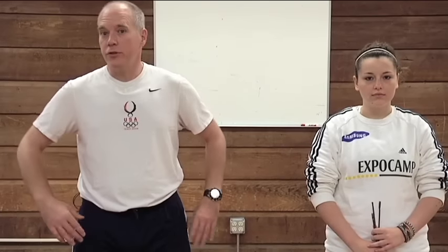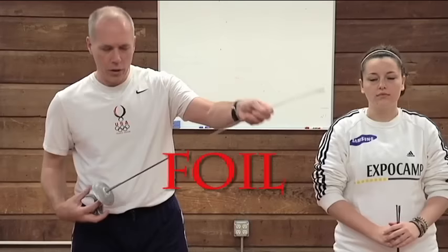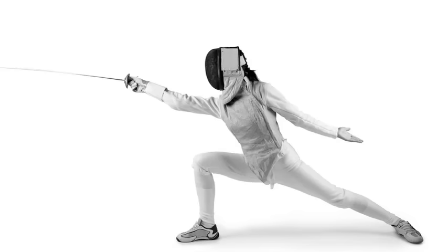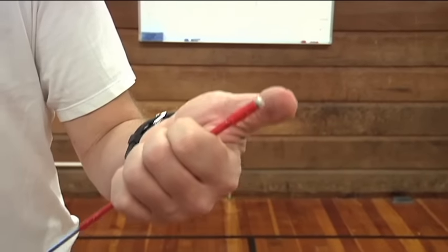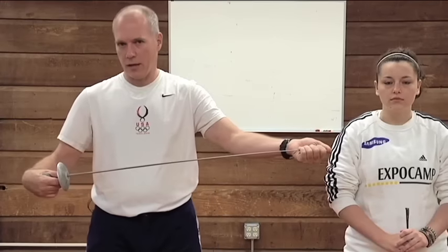The first thing we'd like to do is introduce you to the weapons. The first weapon is the foil. The foil is the lightest of the weapons. The blade is about 43 inches long. It ends in a tip that has a metallic button at the end of it that is part of the electrical scoring apparatus.